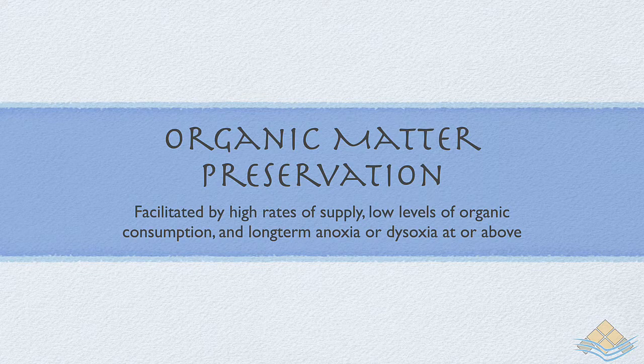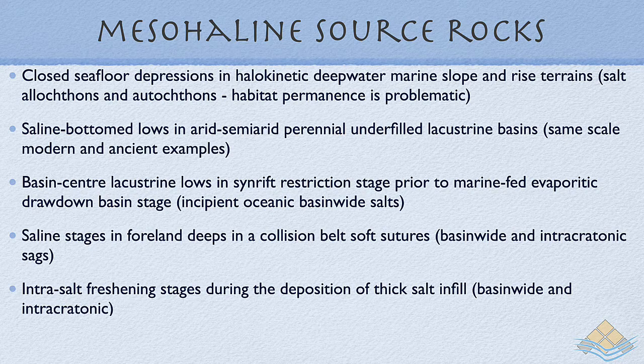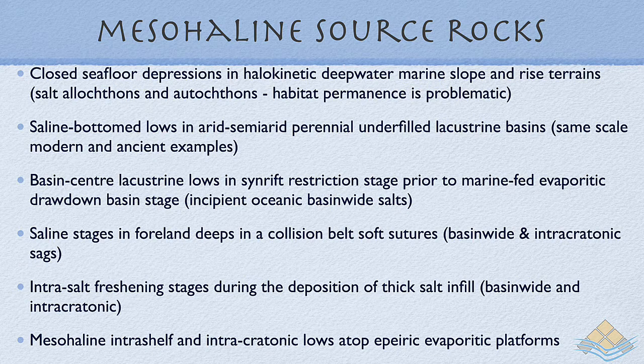We saw in the previous module how closed seafloor depressions — deep hypersaline anoxic lakes atop salt allochthon or autochthon provinces — tend to accumulate organic material. The instability of that environment means these accumulations tend to be local scale with relatively low preservation potential. The other system from the previous module with same-scale modern and ancient counterparts was the underfilled mesohaline lacustrine setting, with comparisons between African rift valley lakes and ancient successions such as the Green River Formation.